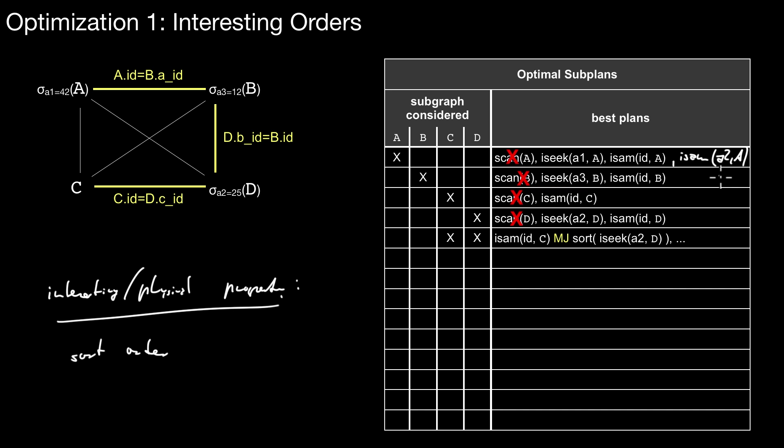the idea is you build subsets here in the best plans. Each subset has a specific physical property and only one plan is kept for each subset. And then you can combine them. Then stuff like this happens here.